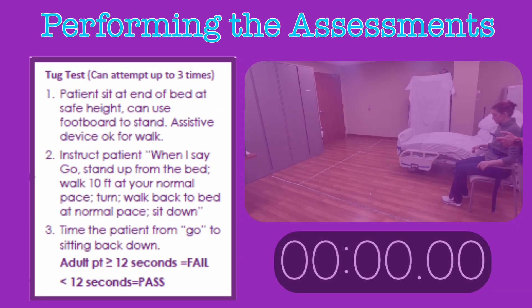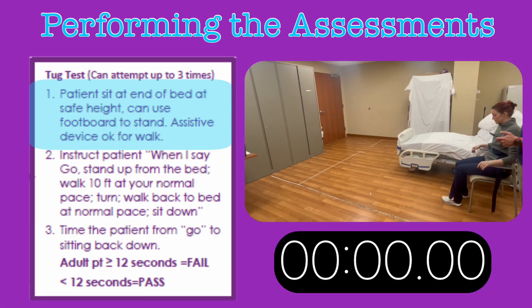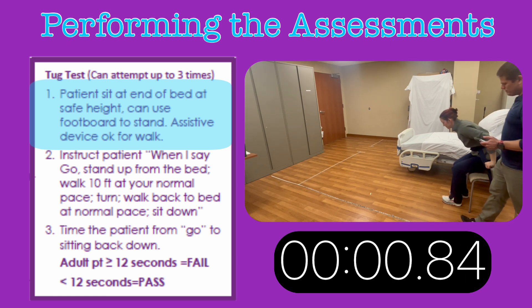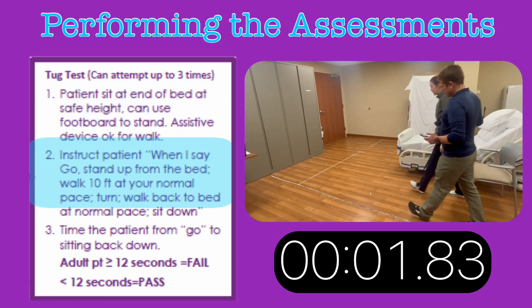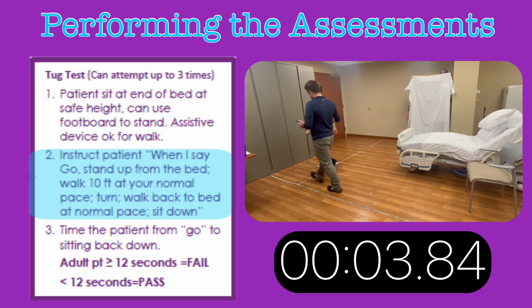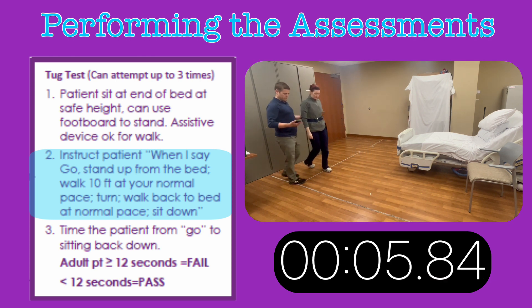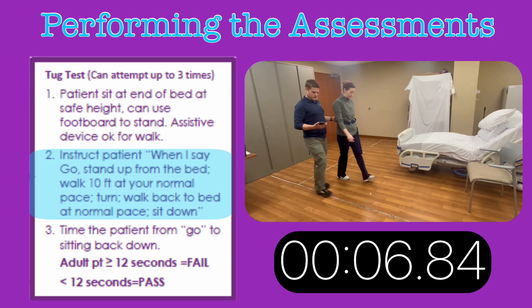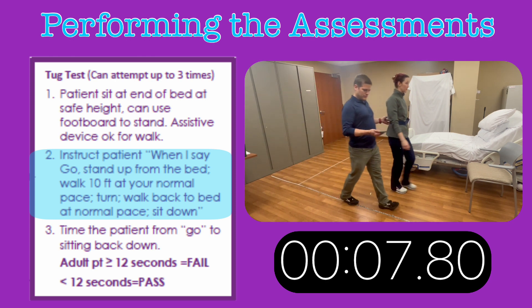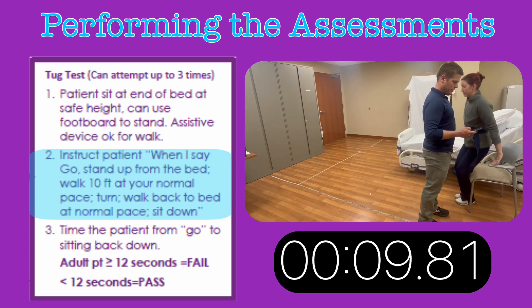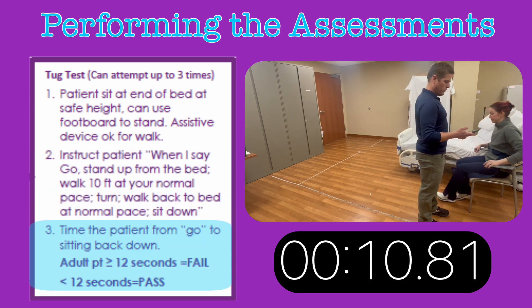To perform a TUG test, direct the patient to get into a seated position at the side of the bed or chair. To pass the TUG test, they must stand from a seated position, walk independently 10 feet out, turn around, walk back, and sit back down. This should take 12 seconds or less.